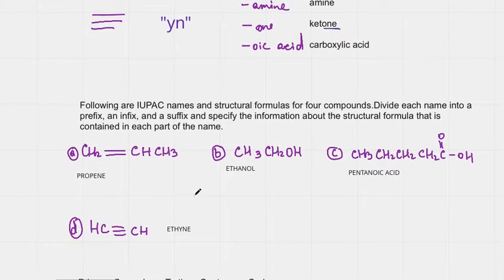This problem says, following are IUPAC names and structural formulas for four compounds. Divide each name into a prefix, infix, and a suffix, and specify the information about the structural formula that is contained in each part of the name.